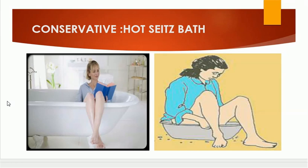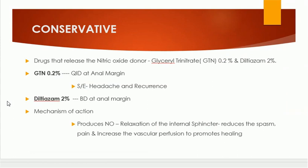Sometimes antiseptics are added to the warm water, and the patient sits for 5 to 10 minutes. This gives relief from pain and promotes healing. This is useful especially for acute anal fissure. Another aspect of conservative management is application of drugs that release nitric oxide locally — such as glyceryl trinitrate (GTN) 0.2% and diltiazem 2%, available as ointments.